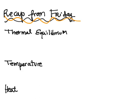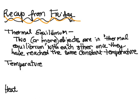Just a quick recap from Friday. Thermal equilibrium is when two or more objects come to reach the same temperature. Objects are in thermal equilibrium with each other when they've reached the same constant temperature. For example, you take a cold glass of milk out of the fridge — originally it's colder than the air temperature — it will reach thermal equilibrium with the room once it's warmed up to exactly the same temperature of the room.